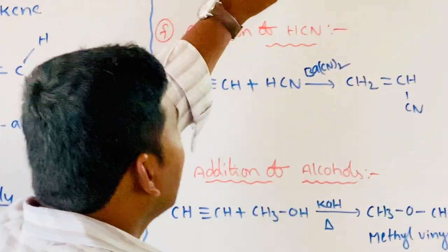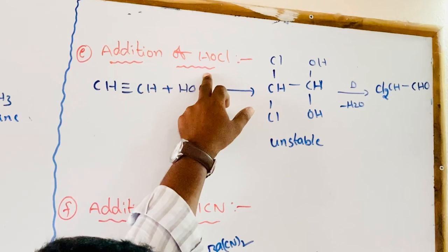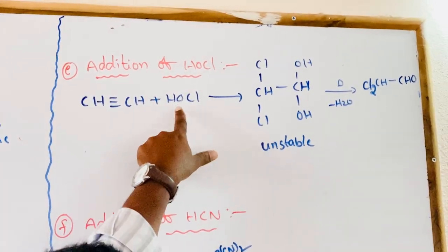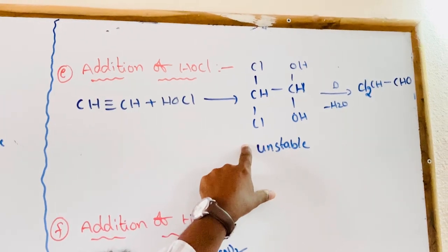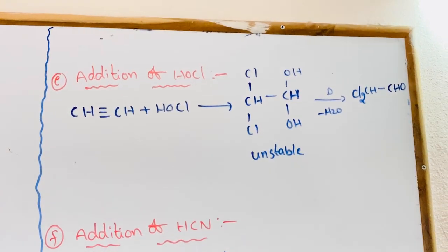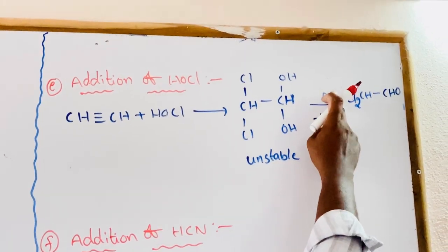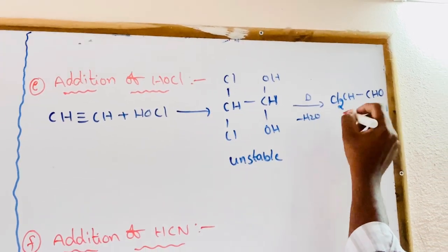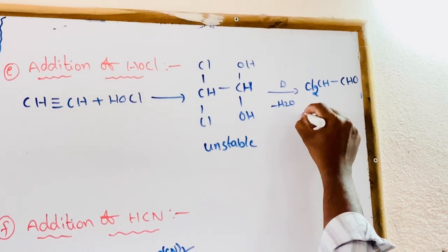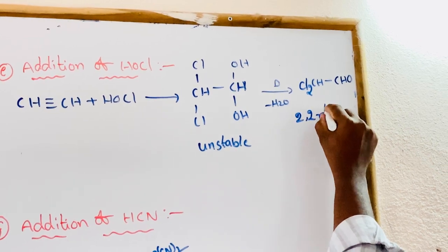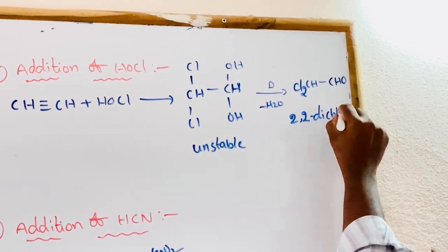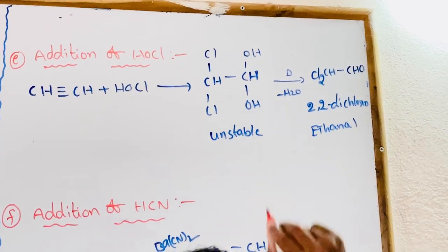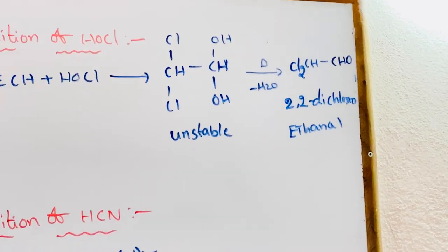Addition of hypochlorous acid. HOCl is hypochlorous acid. Ethyne reacts with hypochlorous acid to give an unstable compound. This unstable compound on heating — elimination of water molecule — gives 2,2-dichloroethanol.